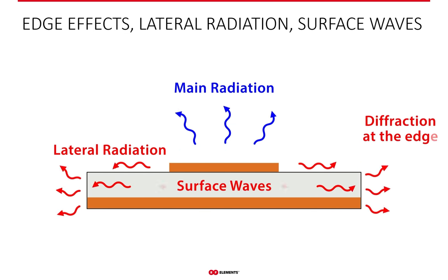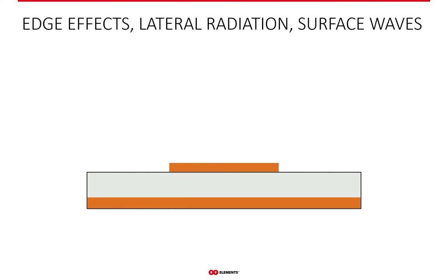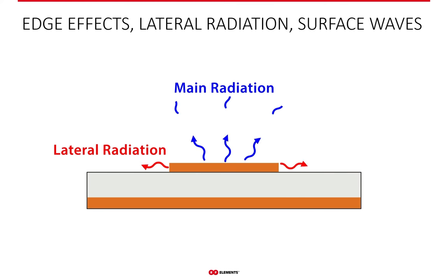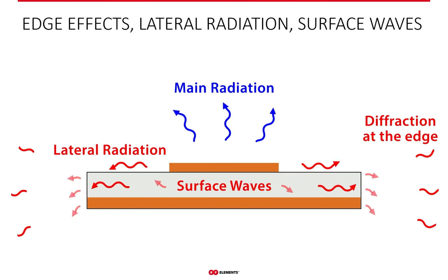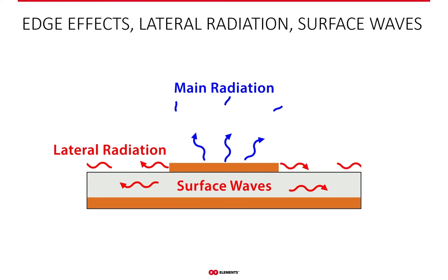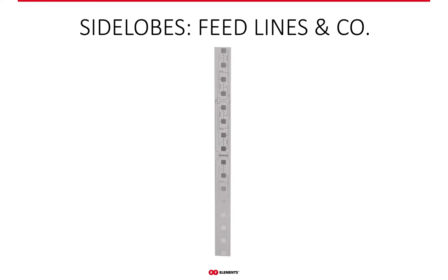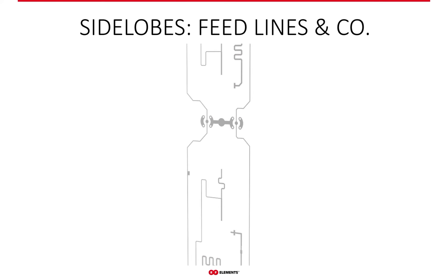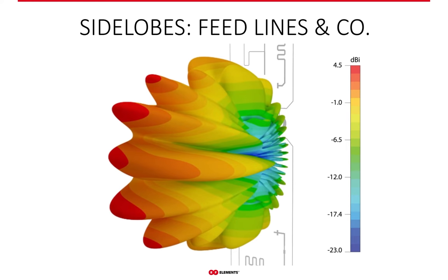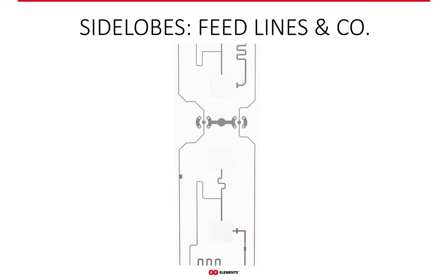Looking at the patch from the side, more is happening than we'd like. The main portion of the wave is radiated from the patch itself — which is what we want — but a portion of the energy travels inside the substrate as a so-called surface wave, causing lateral radiation and diffraction at the substrate edges. These parasitic sources of radiation cause additional side lobes in the azimuth plane of a typical patch array sector. In fact, we can simulate how the feeding lines themselves radiate in the absence of patches, showing the additional side lobes they introduce — a very common issue in the vast majority of patch arrays on the WISP market.